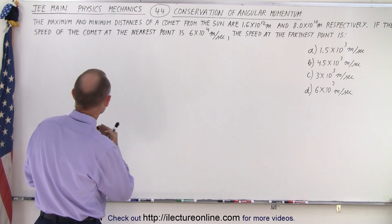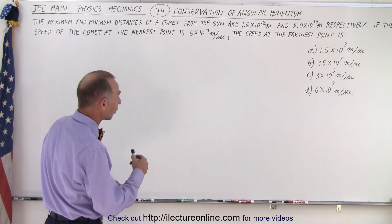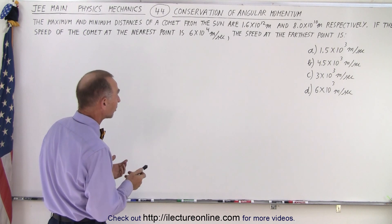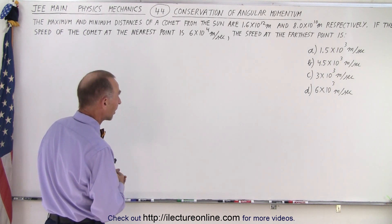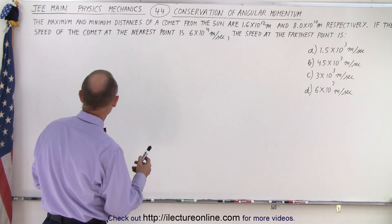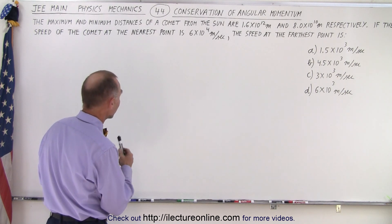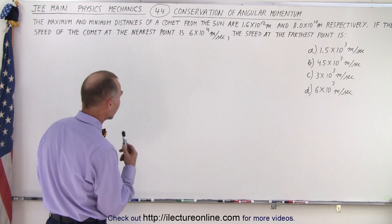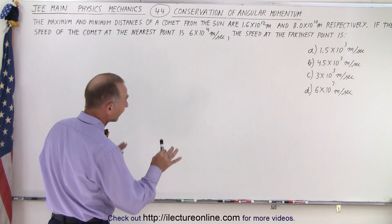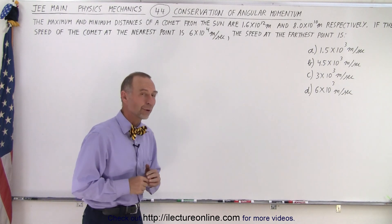The maximum and minimum distances of a comet from the sun are 1.6 times 10 to the 12 meters and 8 times 10 to the 10 meters, respectively. If the speed of the comet at the nearest point is 6 times 10 to the 4 meters per second, the speed at the farthest point is one of those four answers.